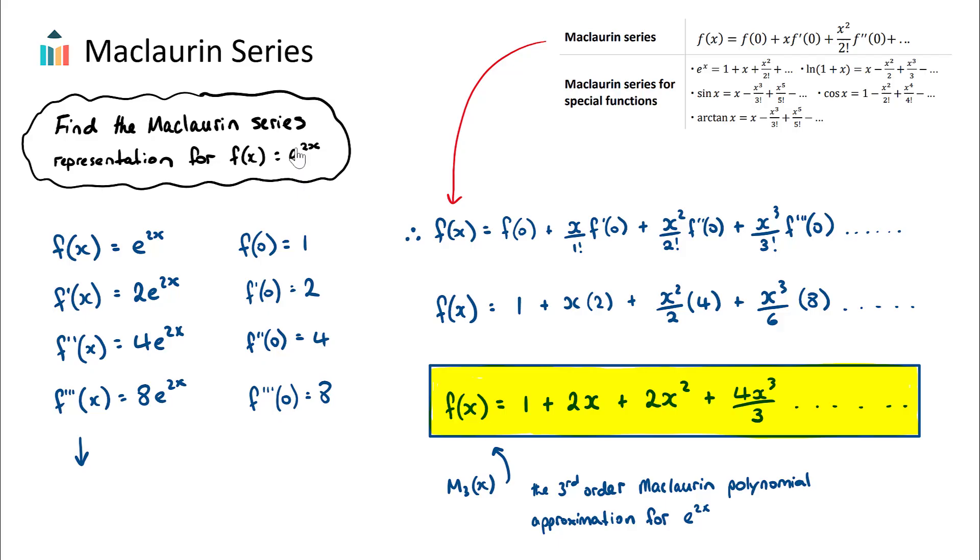But what you will often see is that in exam questions, they will actually tell us how many terms they want for the Maclaurin polynomial approximation. And in this one here, we have stopped at x to the power of 3. If it said find the fifth order Maclaurin polynomial, we would keep going until we get to the x to the power of 5 term.